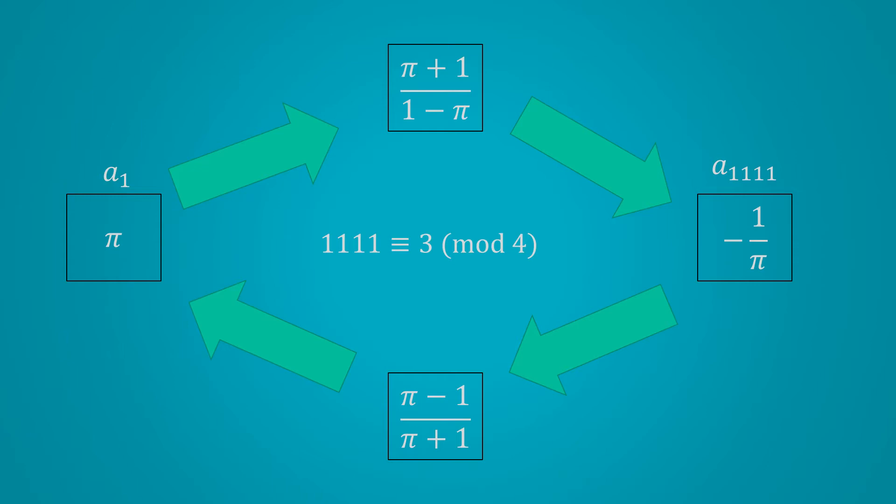That was an algebraic problem on sequences. And now, let's look at a number theory problem. This time, we are asked to find all positive integers m,n, such that 1 factorial plus 2 factorial until n factorial equals m squared.